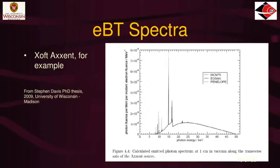Here is the calculated energy spectrum of an electronic brachytherapy source — the Zoft Accent — shown from three different Monte Carlo codes on the same graph. This is in vacuum, so there's no attenuation in air, water, or tissue. It looks different from a standard X-ray beam spectrum and is lower energy. The filtration is different — it comes out through a water cooling catheter, whereas standard beams are filtered with aluminum, copper, or materials like a Thoraeus filter. X-ray beams are filtered for different purposes: to treat patients, harden the beam, or for diagnostic purposes. The EBT filter serves a completely different purpose.